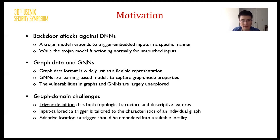We seek to bridge the gap between backdoor vulnerability and graph learning, but it's not simply borrowing techniques from the image domain to the graph. There are many details that need to be redefined in the graph domain, such as how can we define a graph trigger. We define it as a subgraph that should contain topological structure and descriptive features. It's also doubtful that a graph trigger should be universal, since the graph itself is non-structured. Thus, we point out that a trigger can be tailored to reflect the characteristics of a graph. We also need to seek a suitable locality to patch the trigger.